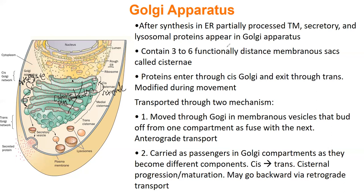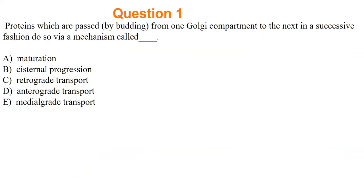Any questions about that? Here's a quick terminology check: if proteins are passed by budding from one compartment to the next in a successive fashion, what is that called? Maturation, cisternal progression, retrograde, anterograde, or medial grade? The answer is D — anterograde — correct.